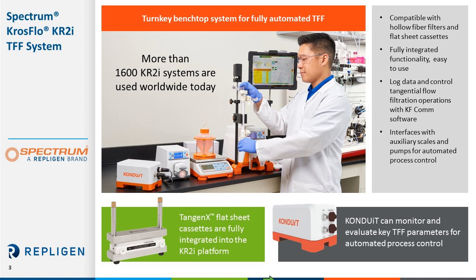The Crossflow KR2i TFF system from Repligen is a turnkey benchtop system for TFF process development and small scale processing, and an ideal system for UFDF applications and downstream processing. The KR2i is the most economical lab scale TFF system on the market today and enables operations of both hollow fiber filters and flat sheet cassettes. The system allows for precise and reproducible control and data logging through the KFCOM control software. Today we will discuss why over 1,600 systems are in use in the industry today.